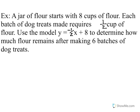Here you'll notice that the slope is negative one-half because we use that flour and it goes away. Because it decreases, we have a negative change over time, and eight is how much flour we start with. So we are using y equals negative one-half x plus eight. I think it's important to recognize the values of x and y.